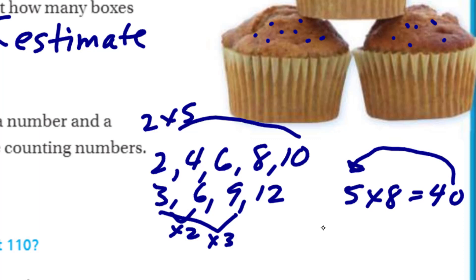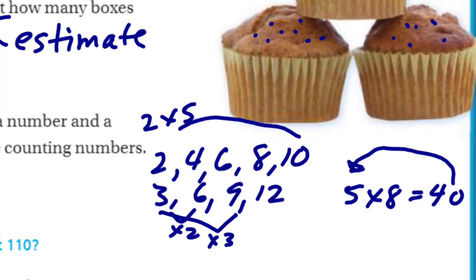I hope that helped out a little bit. This really wasn't part of the Go Math lesson, but Mr. Moro is always sneaking in other stuff. Now let's come on down. It says we're going to estimate 110 divided by eight. Let's just think — what number multiplied by eight is about 110?